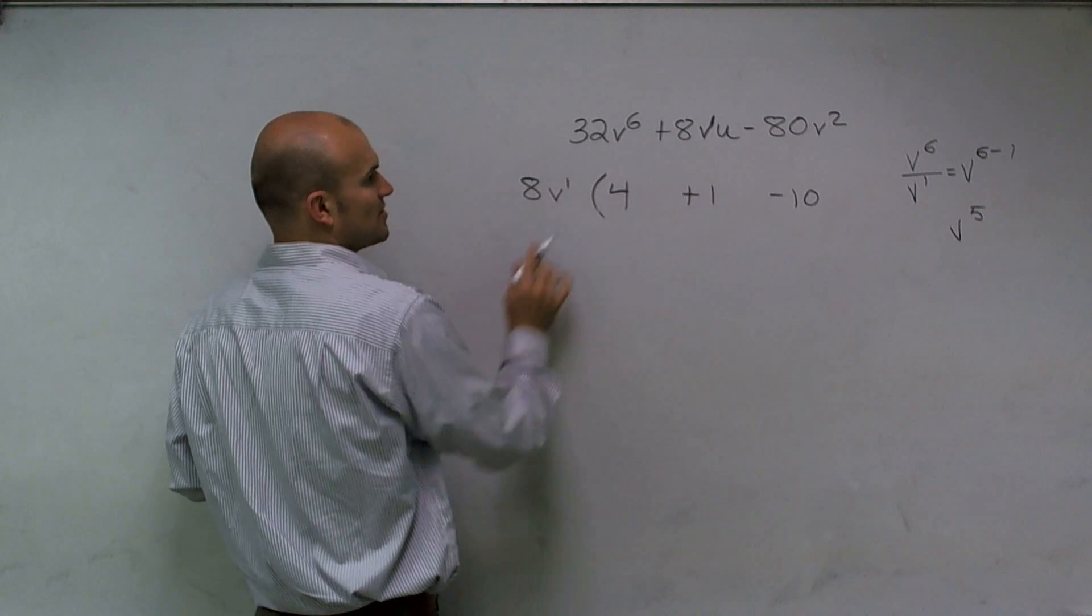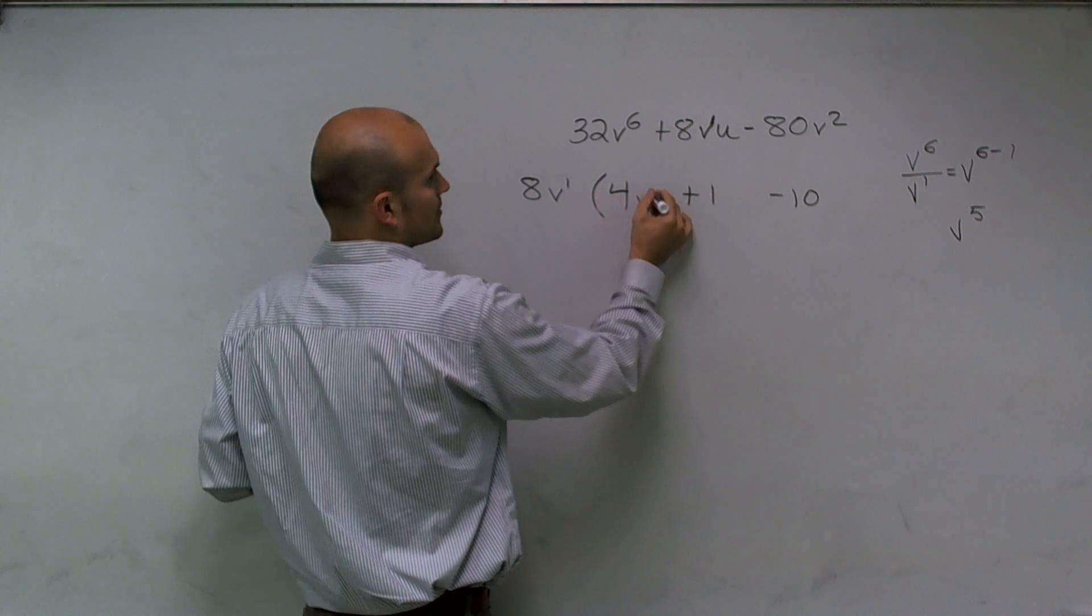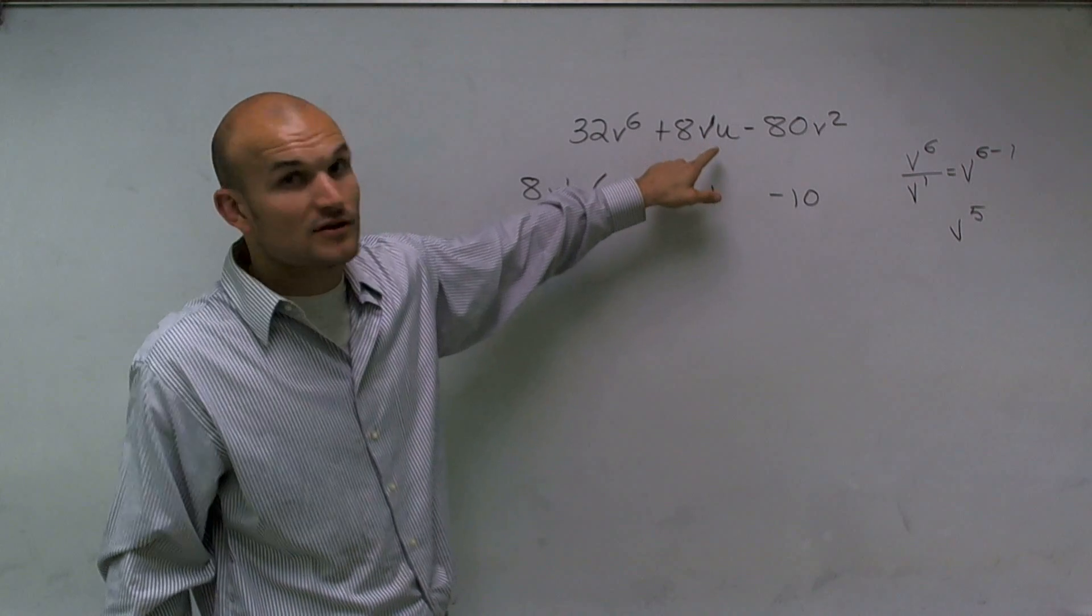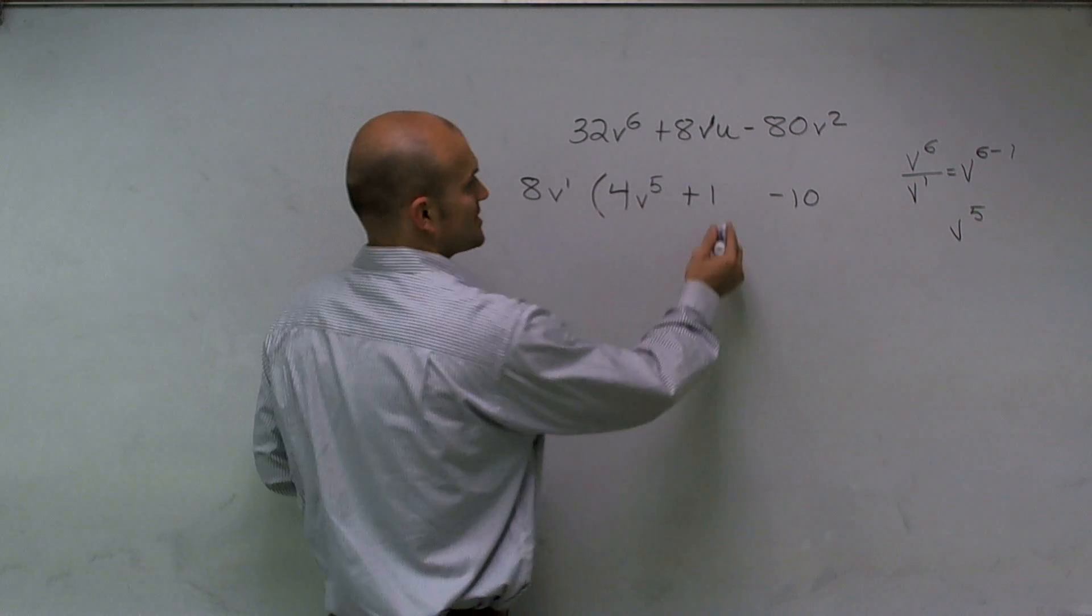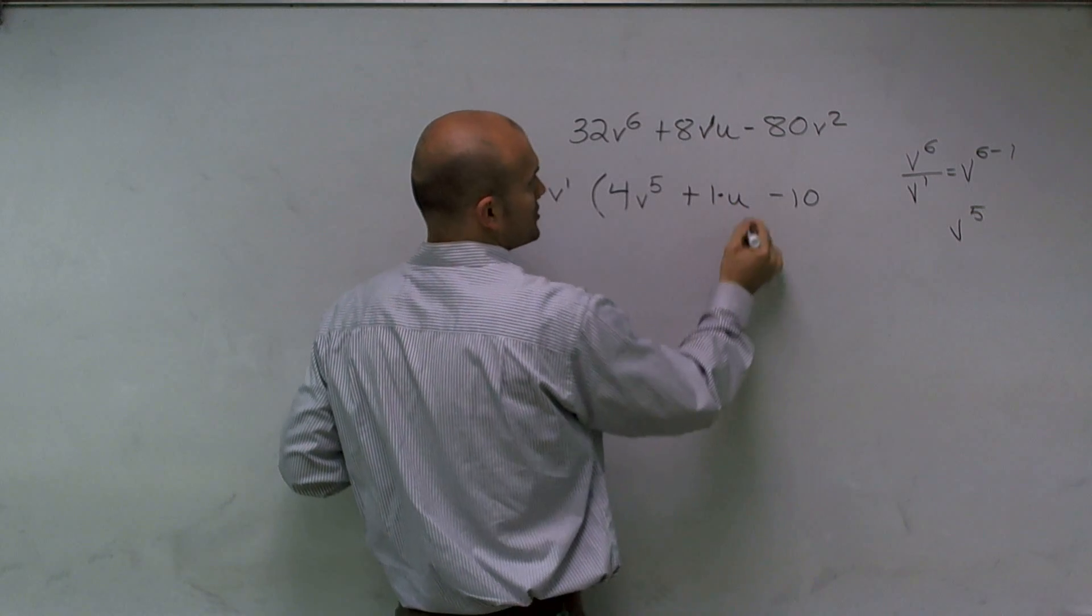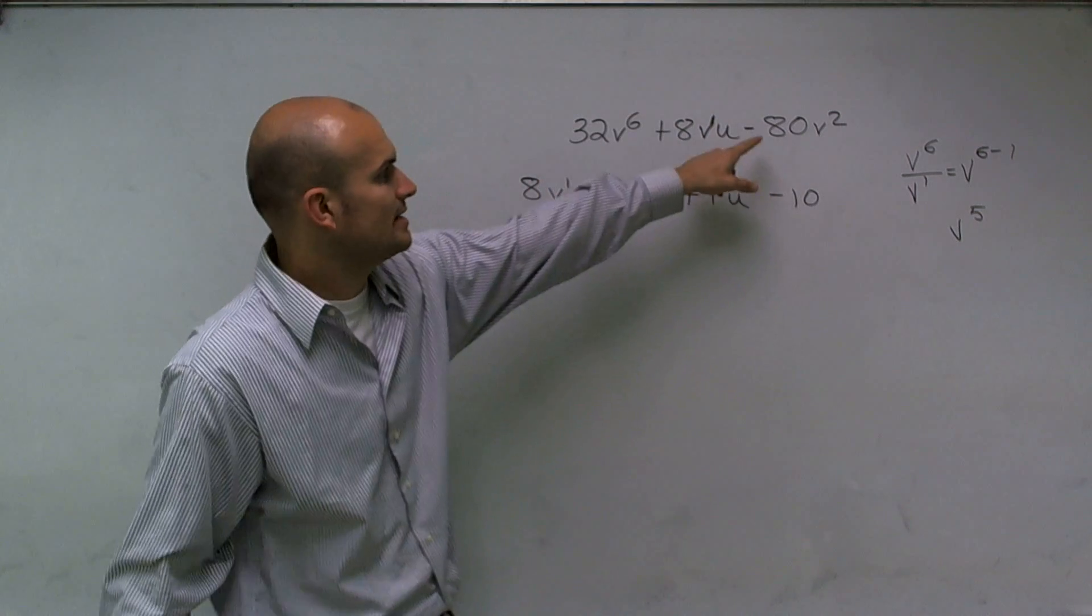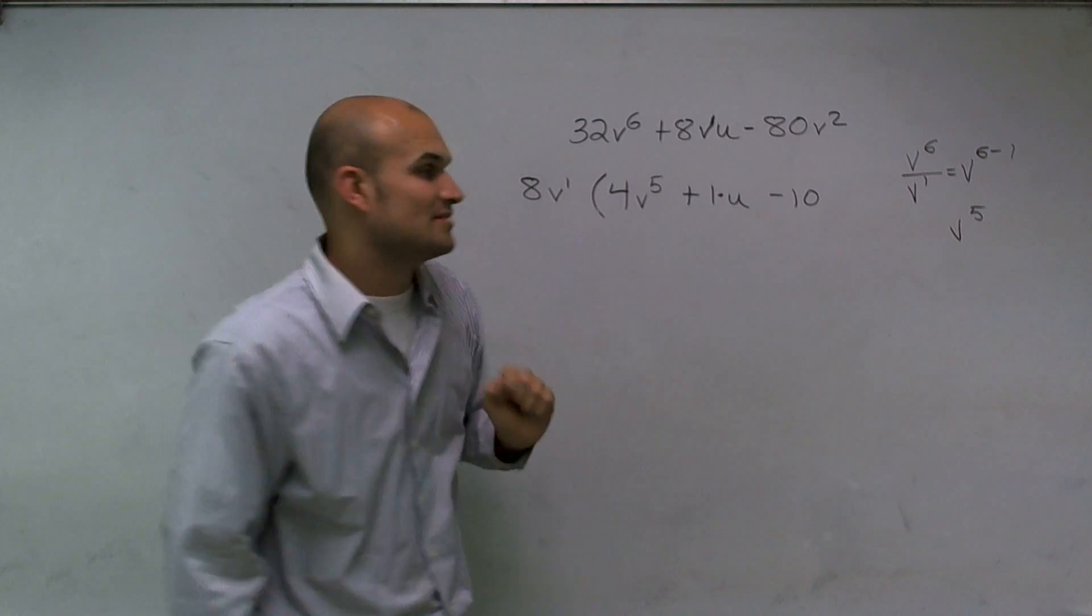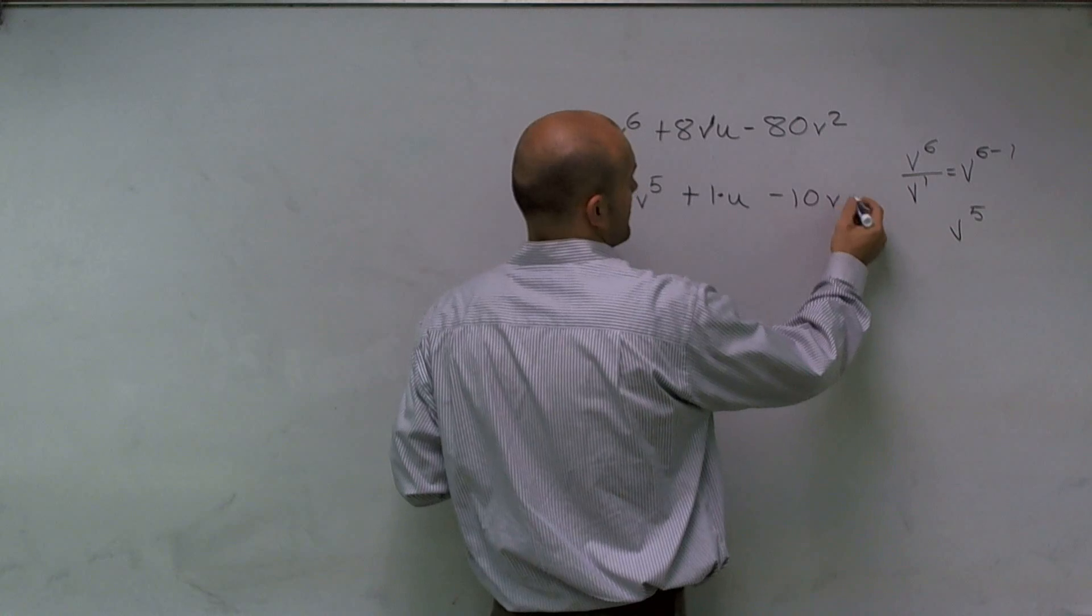So when I factor out a v to the first, I'm left with a 4v to the fifth. If I factor out my v to the first, that's the only v I have here. So I'm just going to be left with a 1 times u. And then here, if I factor out a v to the first from a v squared, I'm going to be left with another v to the first power.